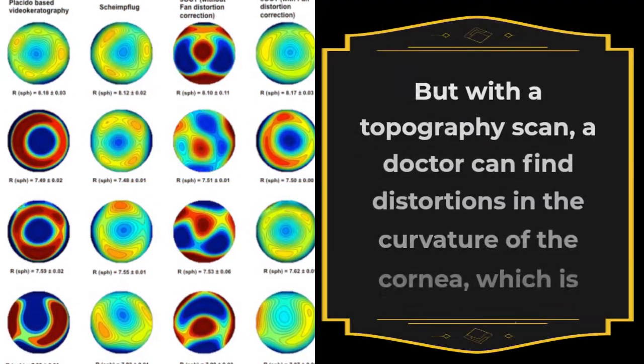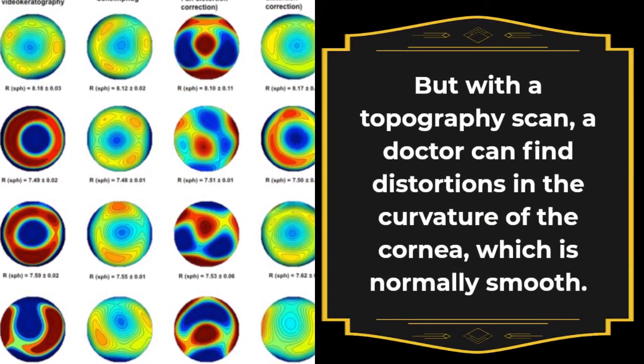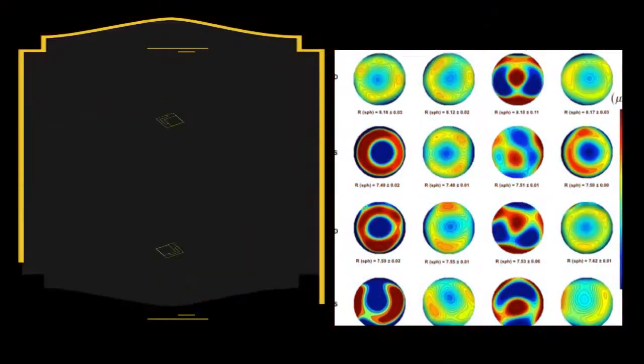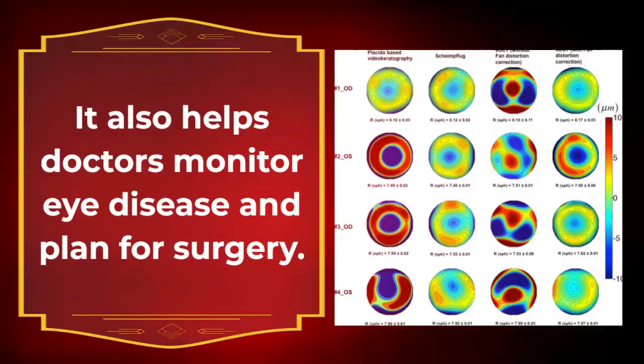With a topography scan, a doctor can find distortions in the curvature of the cornea, which is normally smooth. It also helps doctors monitor eye disease and plan for surgery.